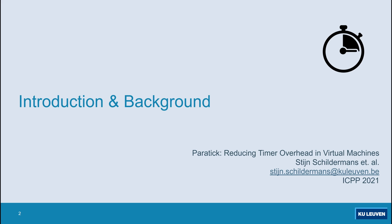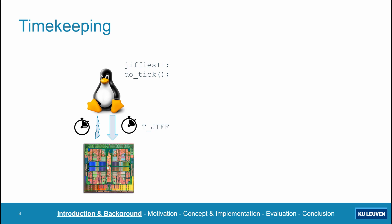Let's start with some background information. As you all probably know, timekeeping is a fundamental duty of the operating system. Here you can see how this process works in Linux, but most operating systems follow a similar approach. The kernel programs a periodic hardware timer interrupt at a fixed frequency, usually between 100 and 1000 Hz, which is called a scheduler tick. Whenever a tick interrupt arrives, the kernel performs some bookkeeping work such as scheduling and accounting, represented by the doTick function, and updates a global variable representing the system time, which is called jiffies in Linux.